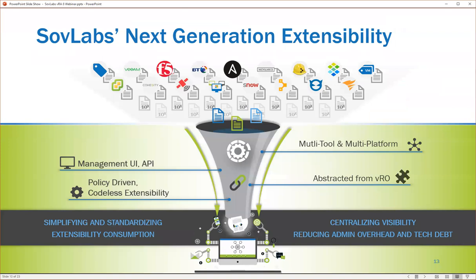In VRA 7, our integration is a VRA drop-in that's managed through VRA to provide these integrations and extensibility items. With VRA 8, our platform is changing quite a bit — we're actually becoming extracted from VRA and running as our own platform outside of VRA itself. This allows us to take all of these integrations and put them into a centralized platform, allowing you to simplify and standardize your extensibility consumption, as well as get centralized visibility into what is happening with those integrations.